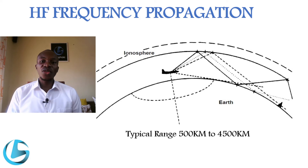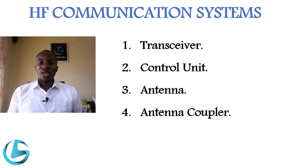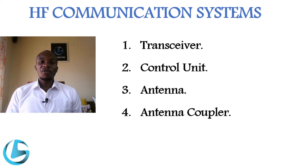The typical range for an HF communication system is from 500 kilometers to 4,500 kilometers. The main components found on HF communication systems are as follows: one, the transceiver; two, the control unit; three, the antenna; and finally, the antenna coupler.